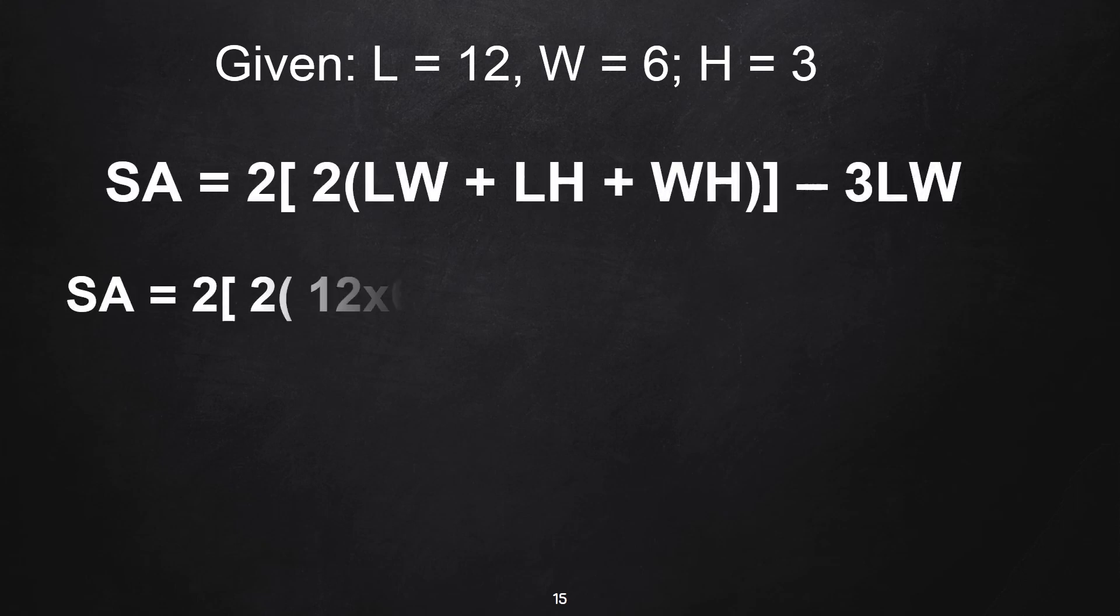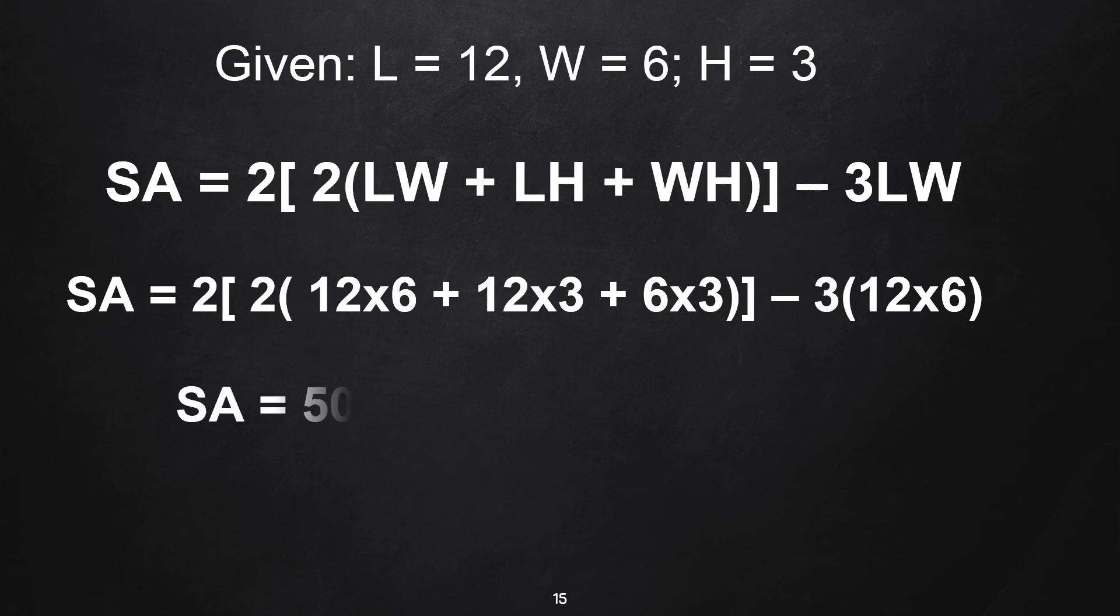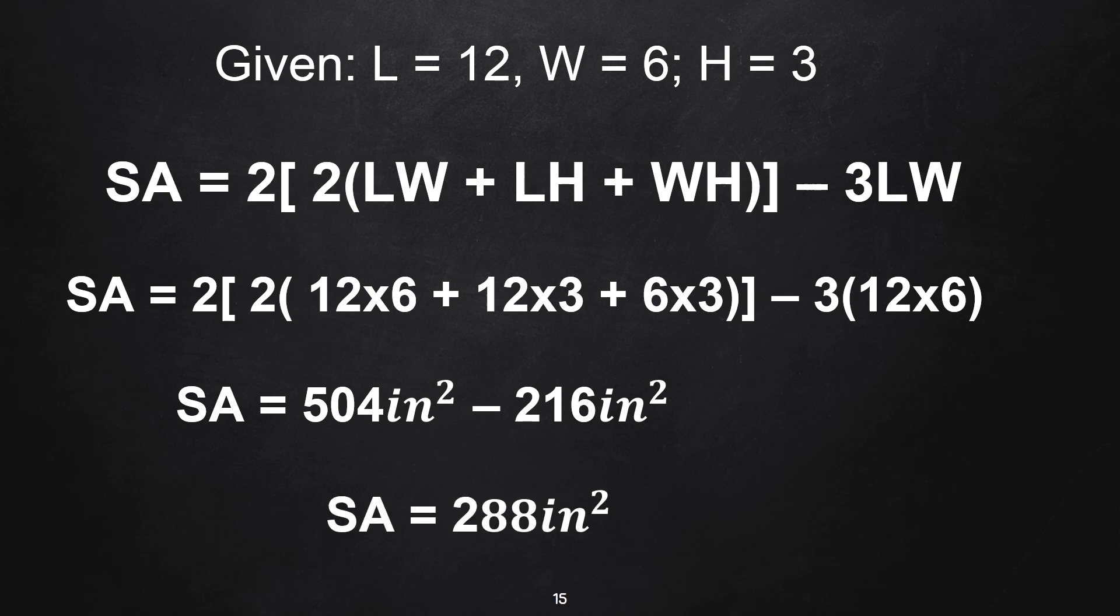Substitute all the values. Then, we have now 504 in² minus 216 in². So the required area for frosting is 288 in². But that is to be converted to cm².